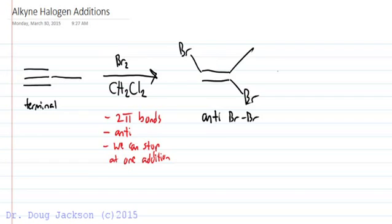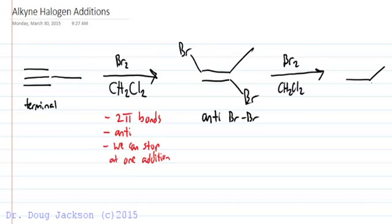If we add a second halogen — and again this works with bromine and chlorine — we would end up losing the stereochemistry because we would lose our double bond and not form a chiral center either, because we add two bromines to each position.